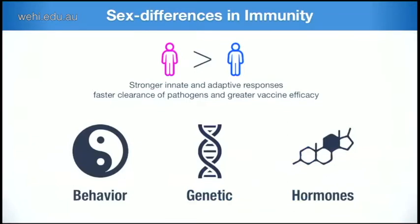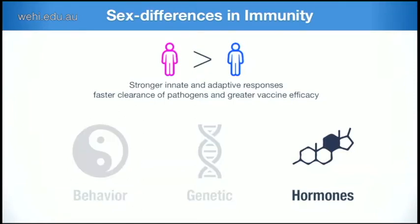These differences are obviously multifactorial. Behavior could be one factor — this might explain why men are more prone to encounter parasites, perhaps because behavior leads them to explore environments where parasites are present. Genetic background is also important — the X chromosome bears many immune genes. Today, we're going to focus our attention on hormones.